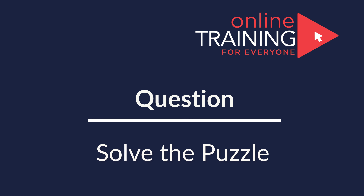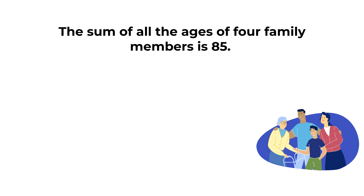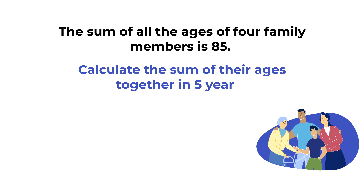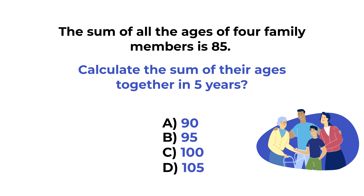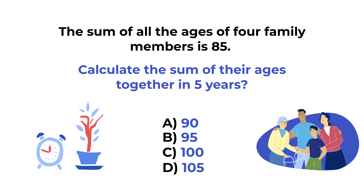Here's a puzzling question that you might frequently see on the test. The sum of all the ages of four family members is 85. What would be the sum of their ages together in five years? You're presented with four choices: A, 90; B, 95; C, 100; and D, 105. Give yourself 20 to 30 seconds to see if you can come up with the solution.